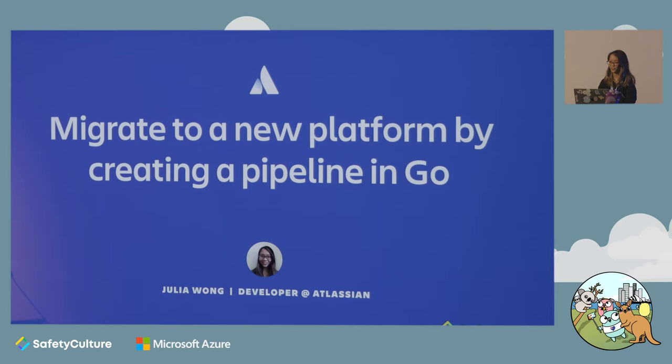Hi, everyone. My name is Julia, and as Chewy said, I work as a developer at Atlassian. Atlassian's mission is to unleash the potential of every team, and we do this by providing software like Jira, Confluence, and Trello, to name a few, to help teams collaborate and get stuff done together.